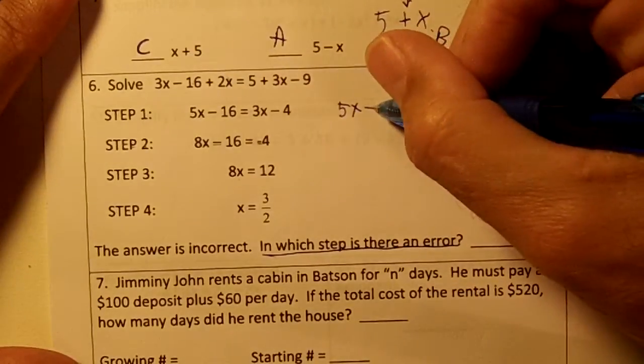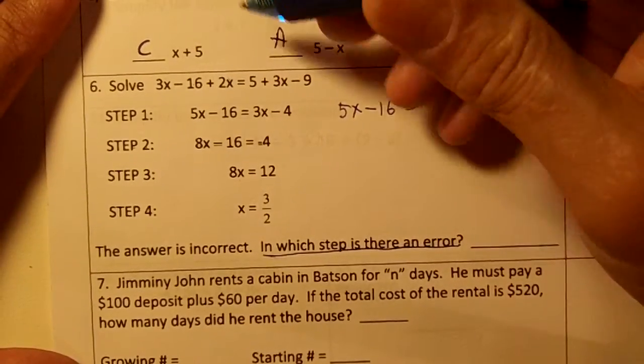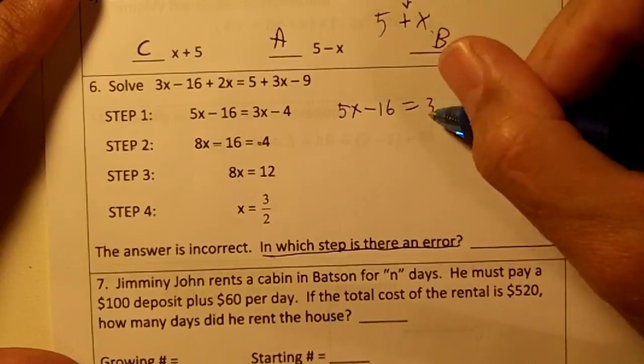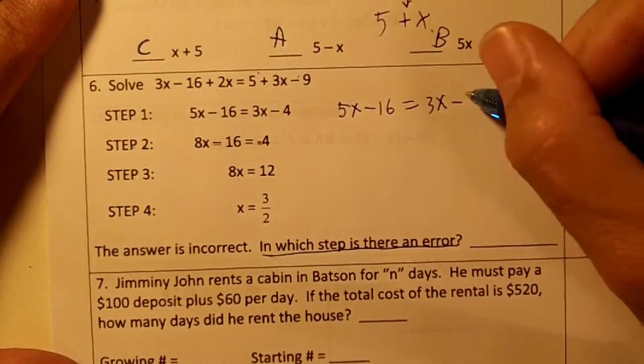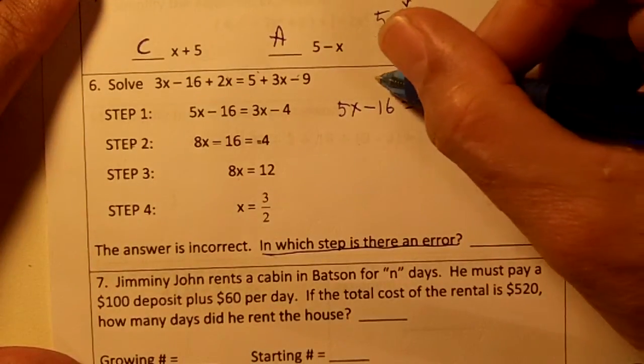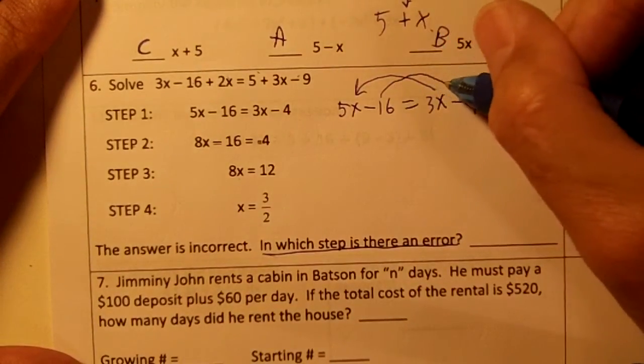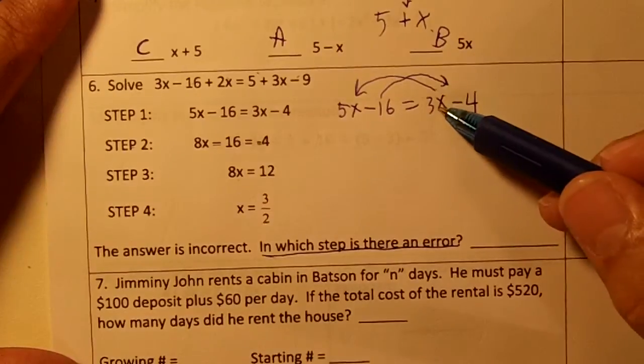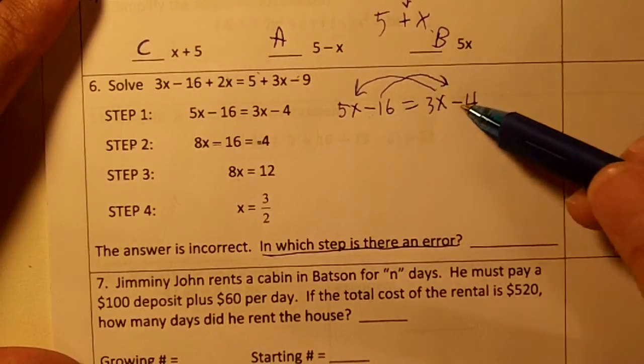We still have minus 16 equals, and on this side we have 3x, and 5 minus 9 would be negative 4. Now then we're going to move the letters to the left and the numbers to the right. We need to move all the variables to one side and all the constants to the other side.